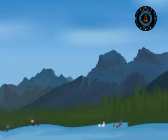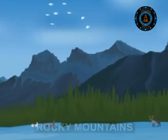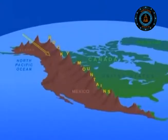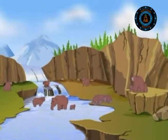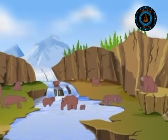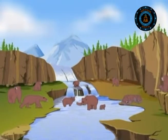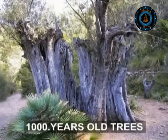Dividing the north-west territory from Alaska is a huge mountain range called the Rockies, running nearly 4,800 kilometers long until Mexico in the south. You also have the Great Bear Rainforest, home to approximately 2,000 grizzly bears, with trees that are 1,000 years old.